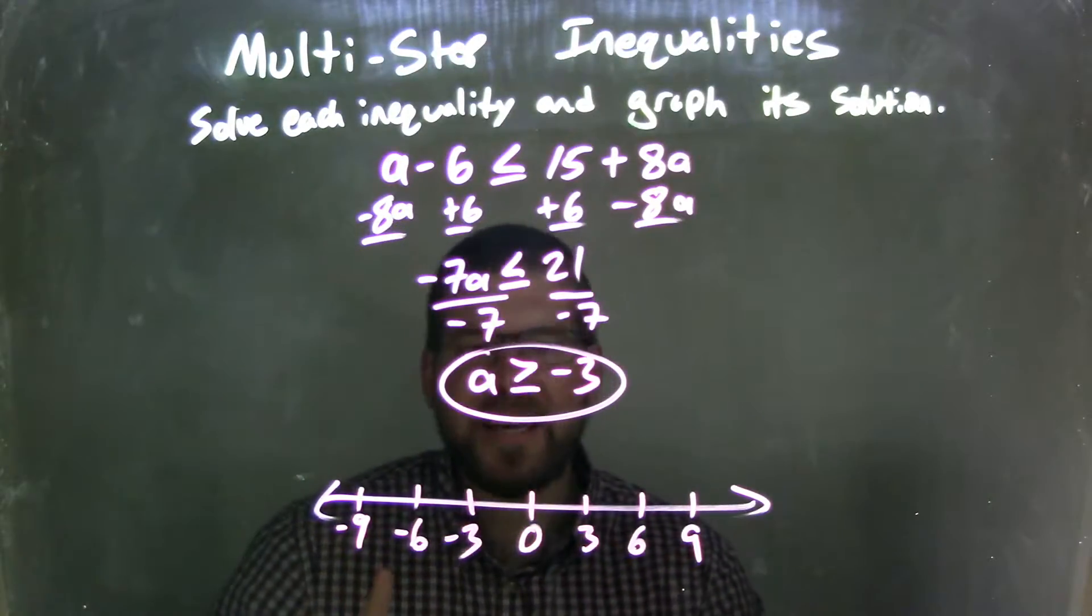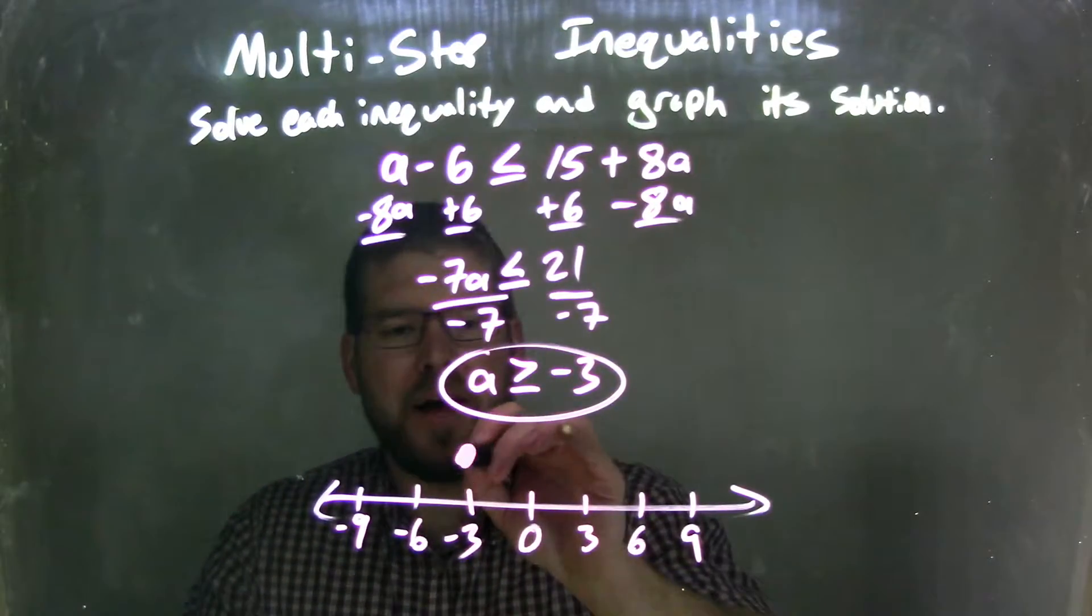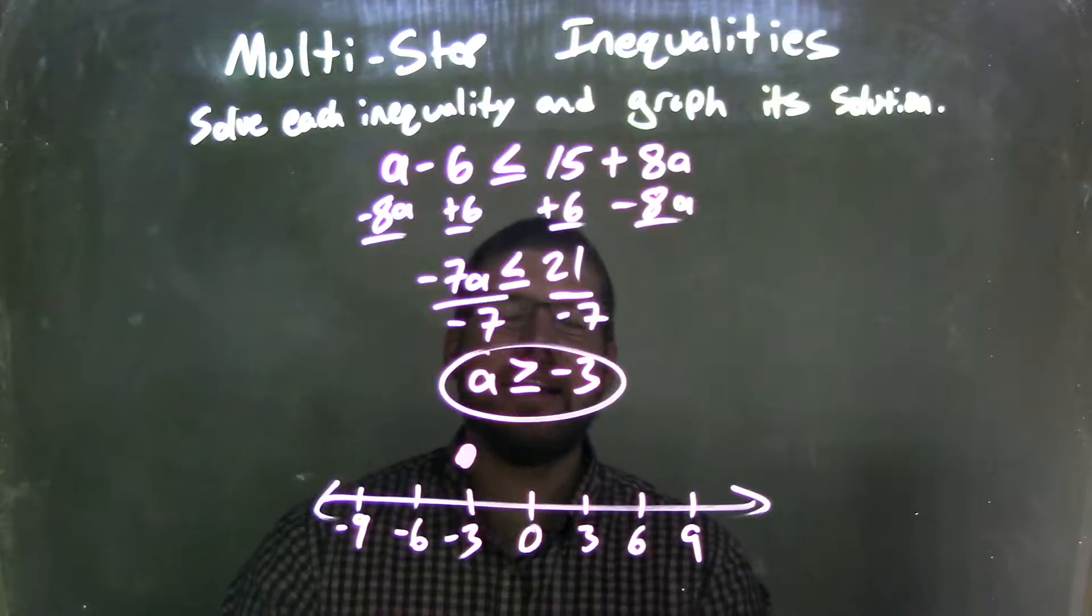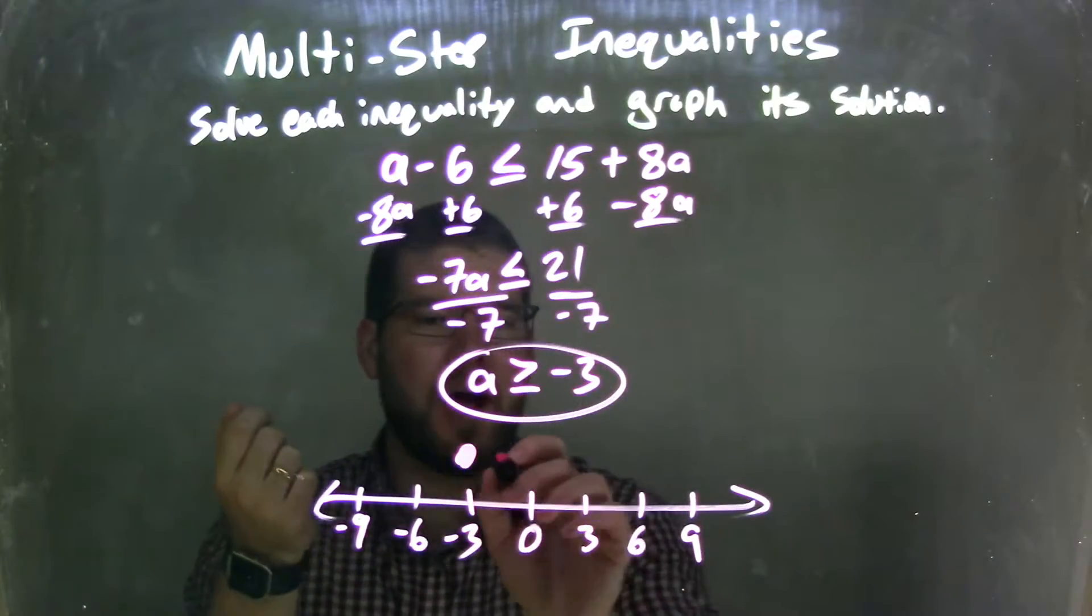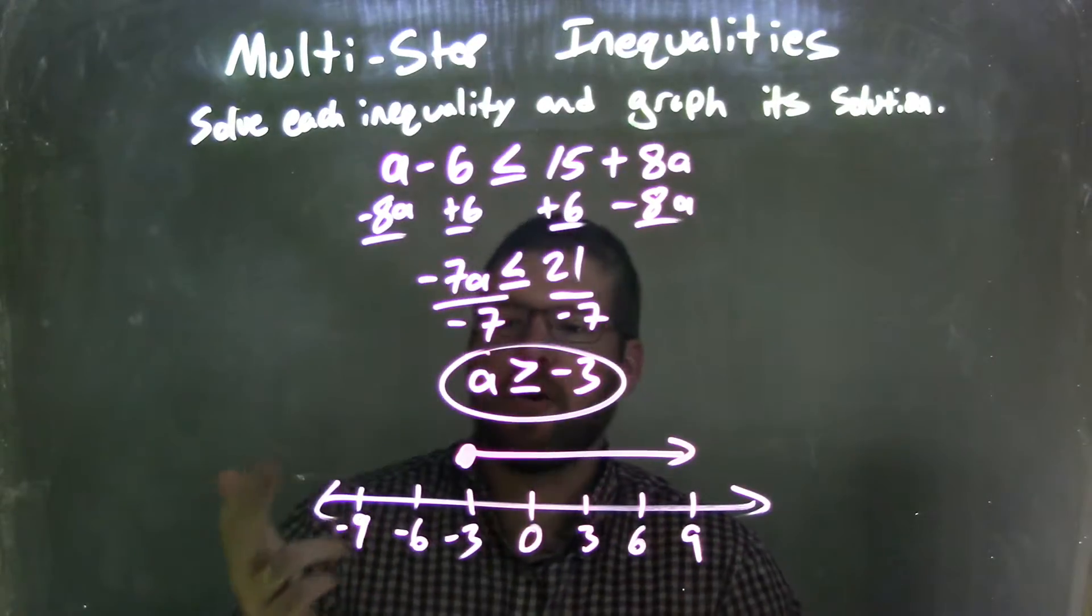Well, if a is greater than or equal to negative 3, the key thing first is equal to means a closed circle at negative 3. Now since a is also greater than negative 3, I'm going to put my arrow to the right, showing that a is greater than negative 3. And that's it.